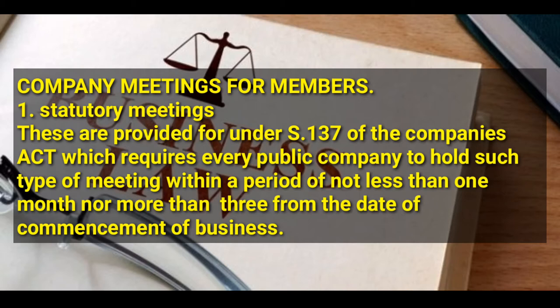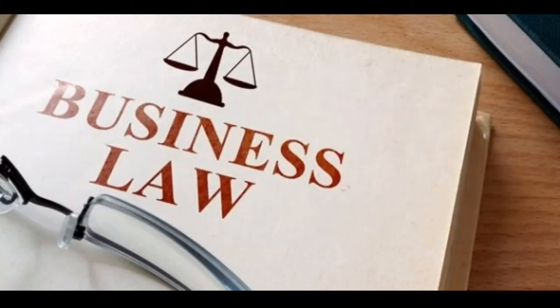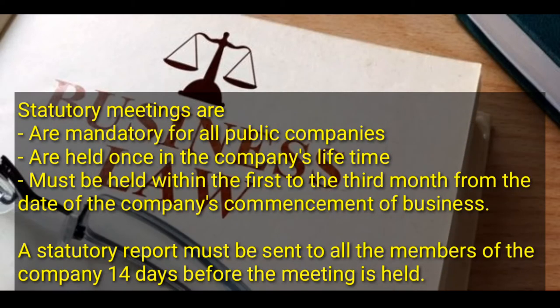There are four types of meetings through which shareholders manage the company. The first one is statutory meetings. These are provided under section 137 of the Companies Act, which requires every public company to hold such a meeting within a period of not less than one month and no more than three months from the date of commencement of business. Statutory meetings are mandatory for all public companies and are held once in the company's lifetime.